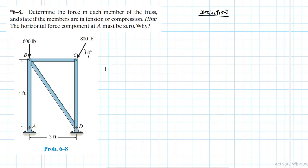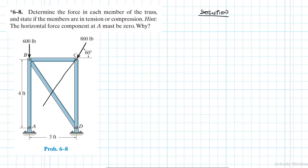The hint tells us we don't expect any horizontal force at A — no Ax component. Why? First, we don't have any applied force at A in the horizontal direction or at an incline. Second, we don't have any member connection at A that would introduce a horizontal force component.